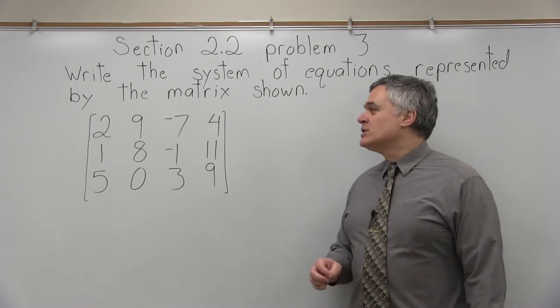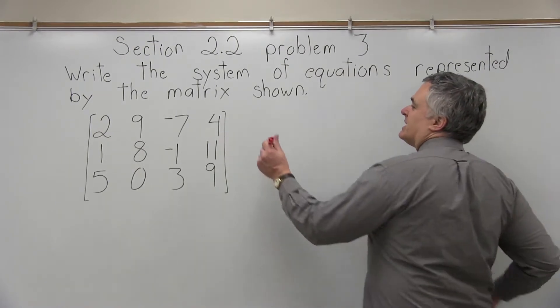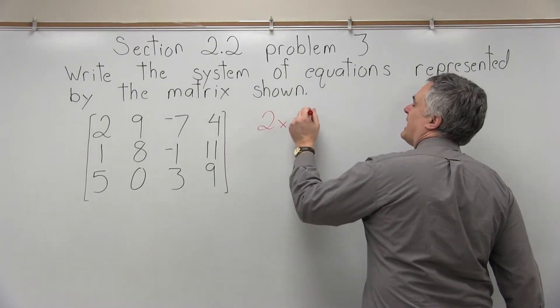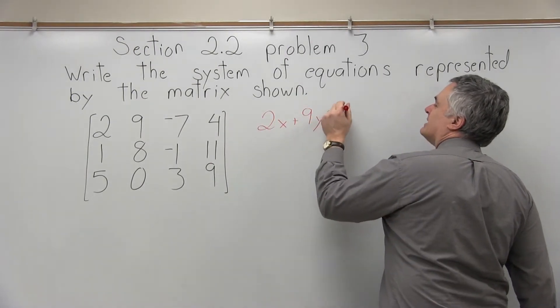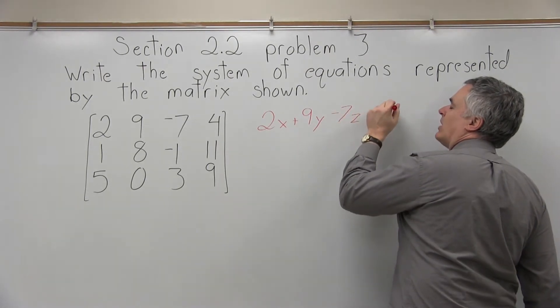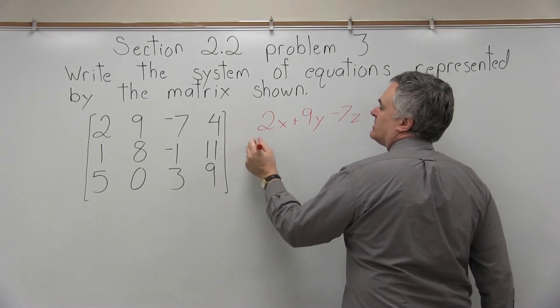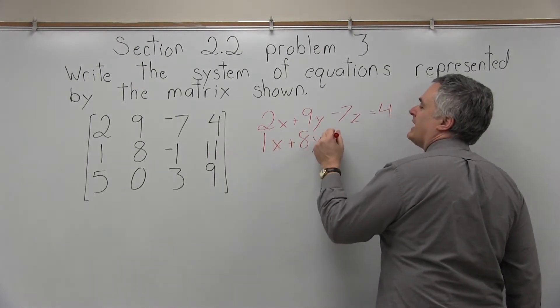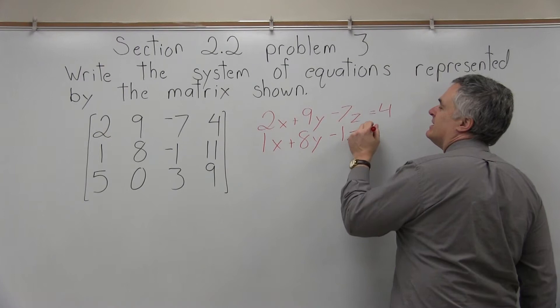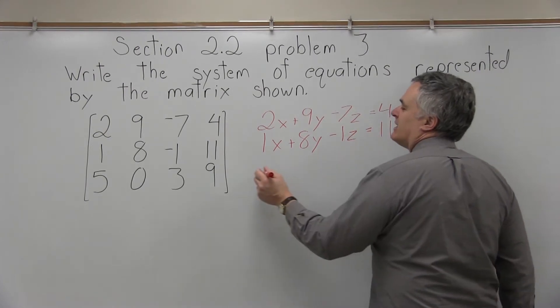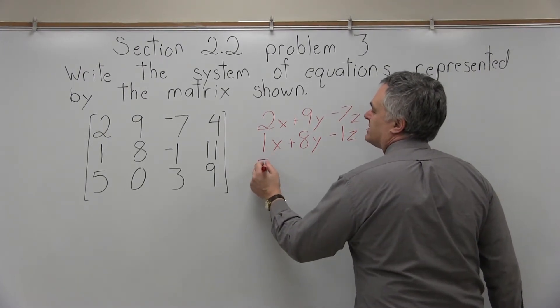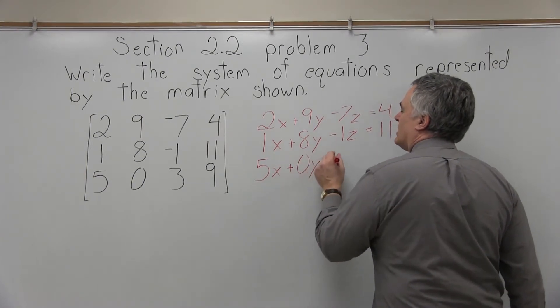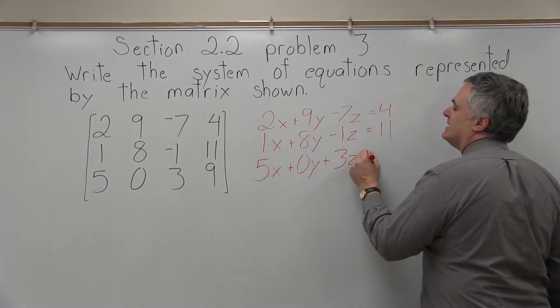So the top row represents the equation 2x plus 9y minus 7z equals 4. The middle row represents the equation 1x plus 8y minus 1z equals 11, and the bottom row represents the equation 5x plus 0y plus 3z equals 9.